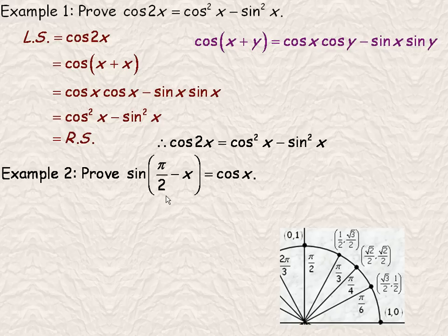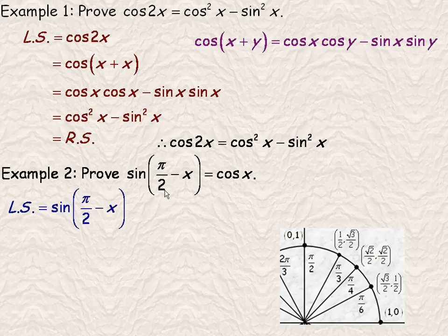In example number 2, we're asked to prove one of the co-function identities, that sin(π/2 - x) is the same as cos x. And so I'll start with the left side, the sin(π/2 - x).